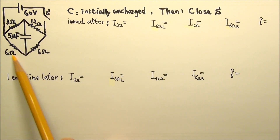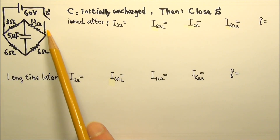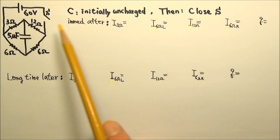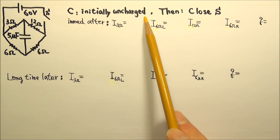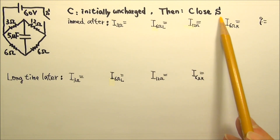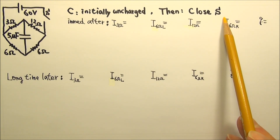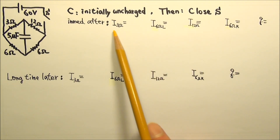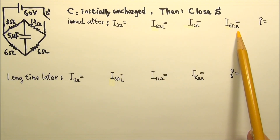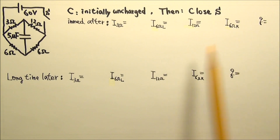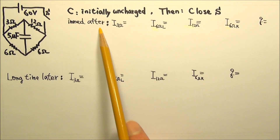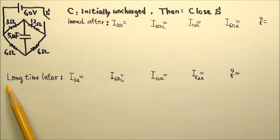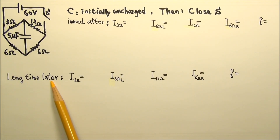In this RC circuit, the capacitor is initially uncharged. We then close the switch and find the current in each resistor and the charge on the capacitor immediately after the switch is closed and a long time later.